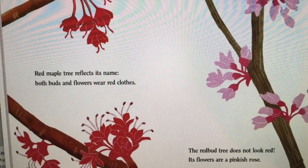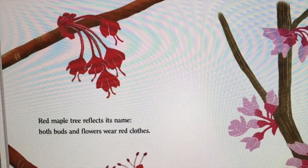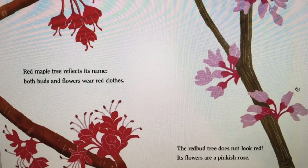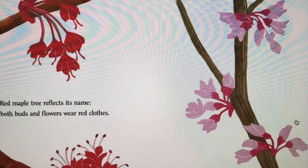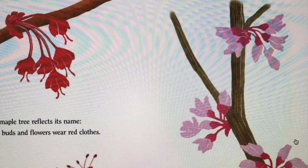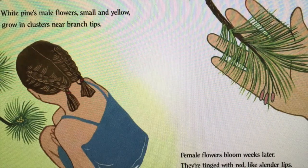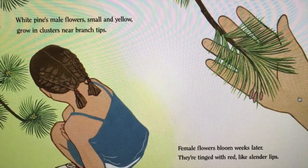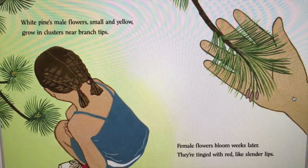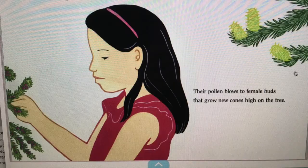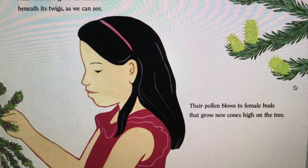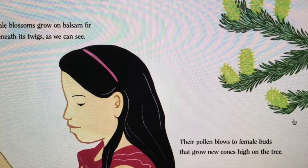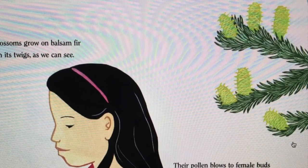Red maple tree reflects its name — both buds and flowers wear red clothes. The redbud tree does not look red; its flowers are pinkish rose. White pine's male flowers, small and yellow, grow in clusters near branch tips. Female flowers bloom weeks later; they're tinged with red like slender lips. Male blossoms grow on balsam fir beneath its twigs — their pollen blows to female buds that grow new cones high on the trees.